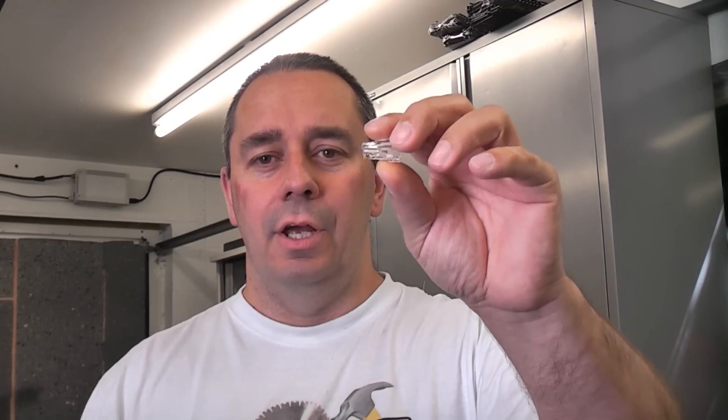If you don't want to use these you can actually buy a patch lead that is ready-made and that will have the RJ45 connector already crimped on it, but I'm going to show you how to crimp one of these onto some Cat5e cable.